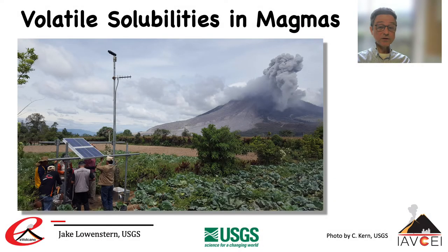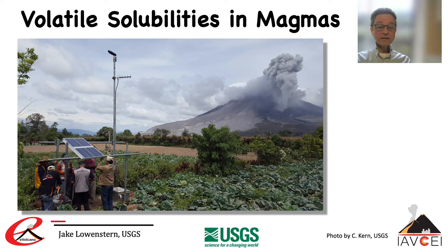You're monitoring a volcano and your geochemist reports that 5,000 tons per day of sulfur dioxide is being emitted. Is that a lot? If the ratio of water to CO2 is 100 compared with yesterday when it was 10, what does that mean? Is it important if you just started to detect HCl or bromine oxide?